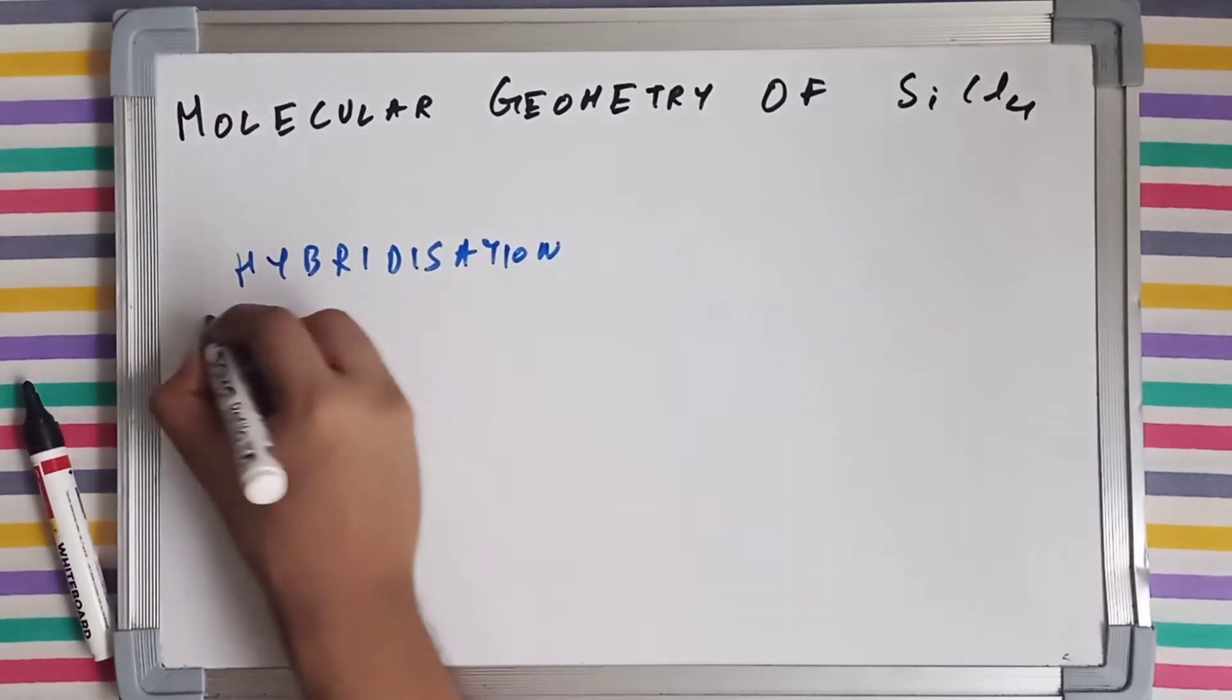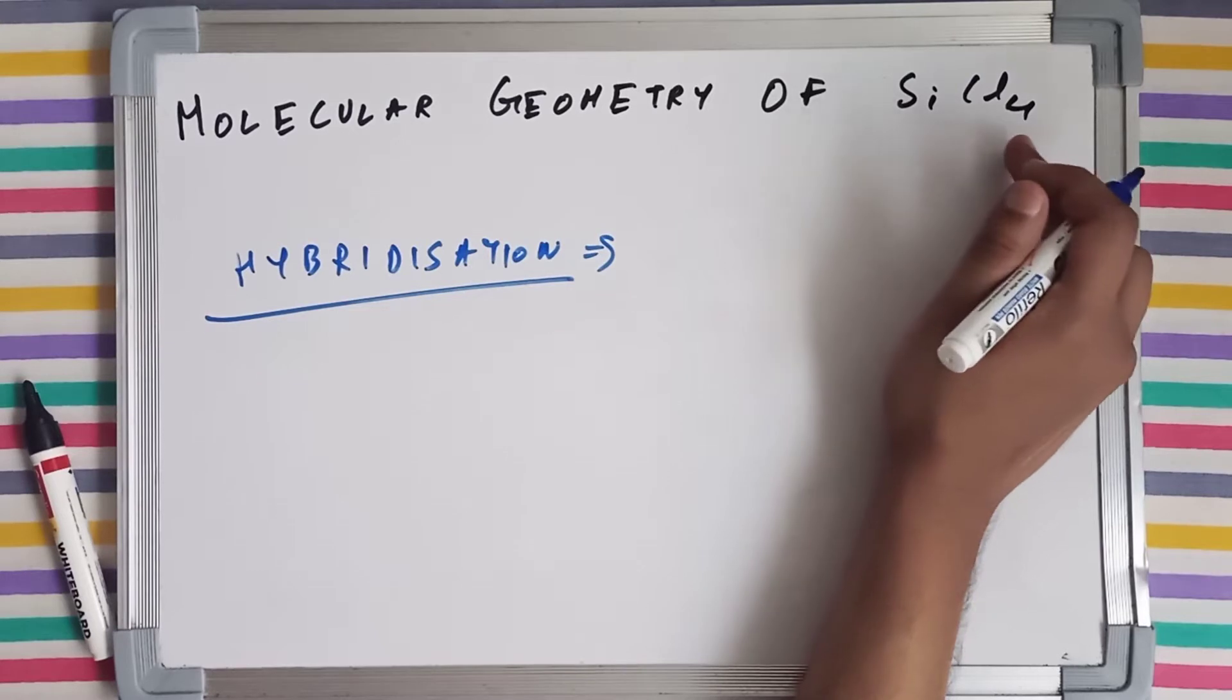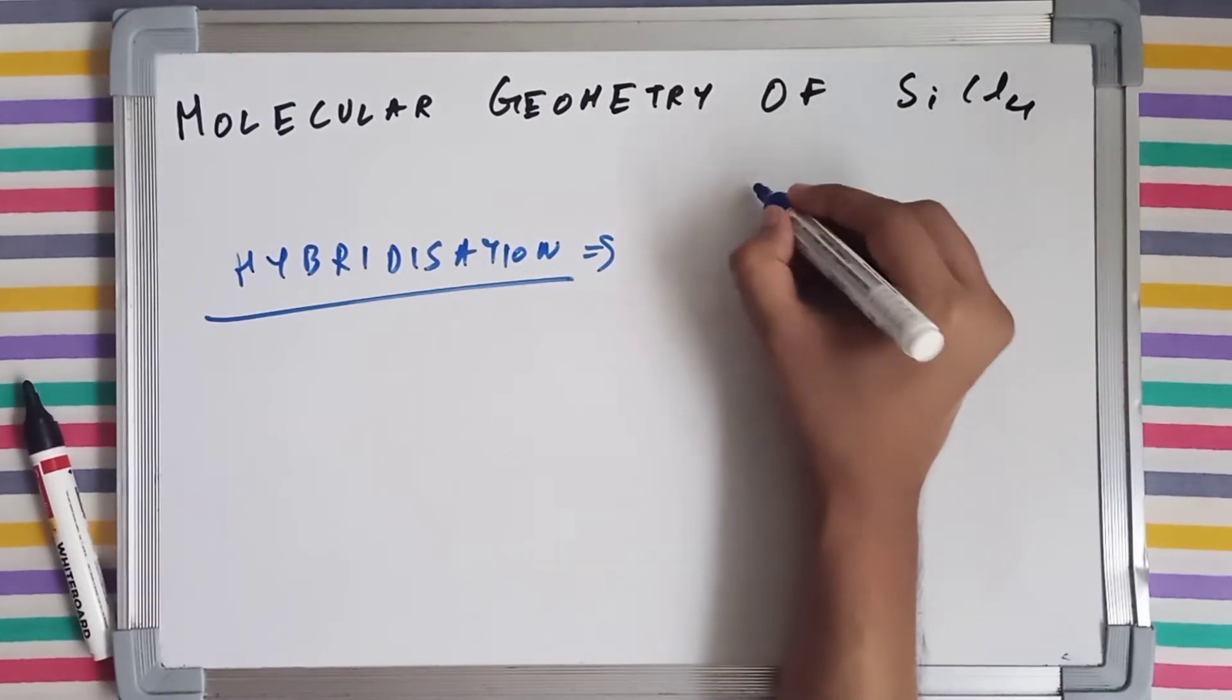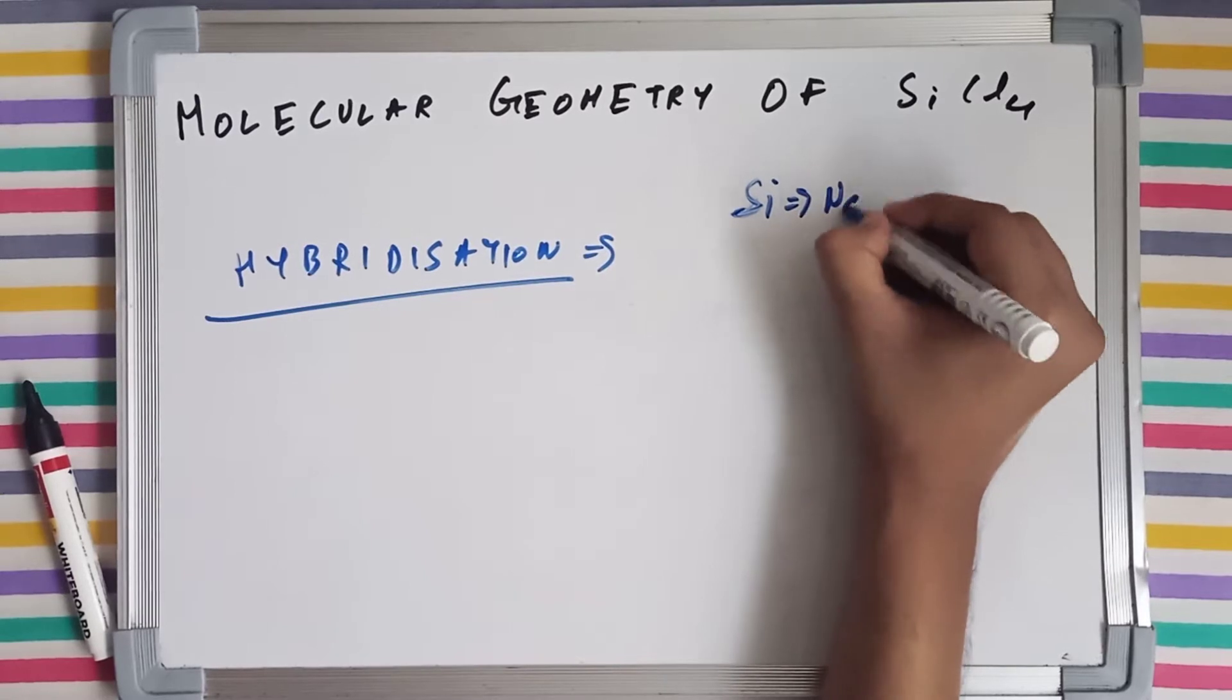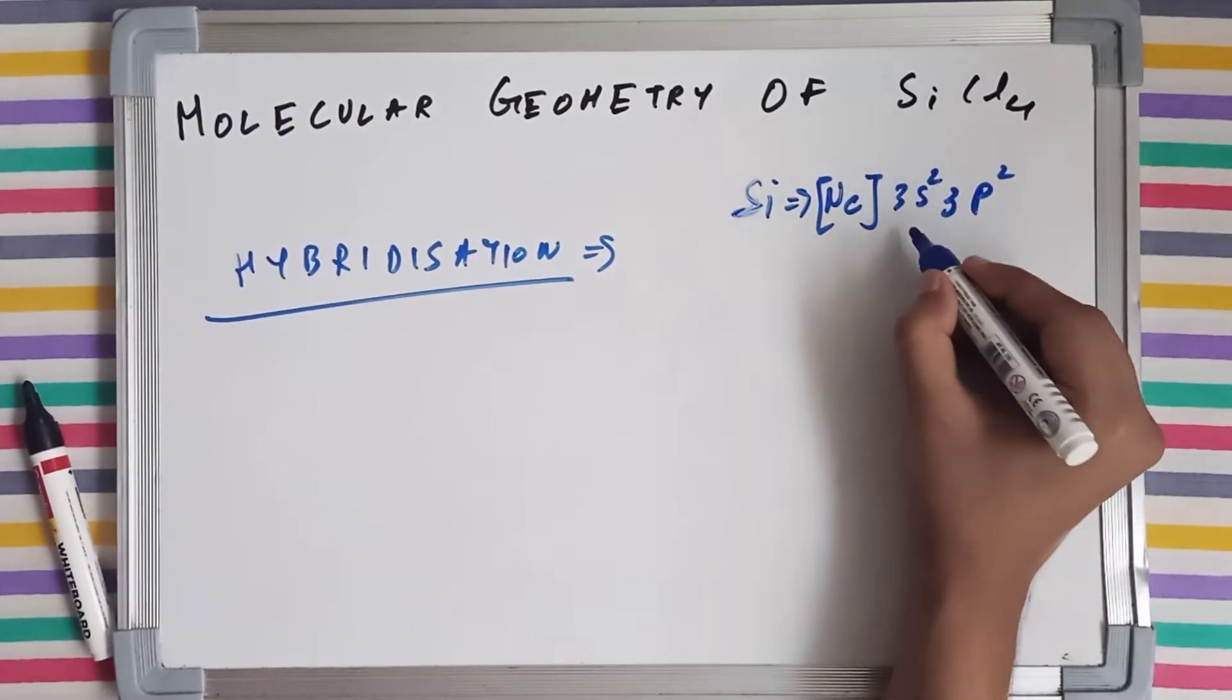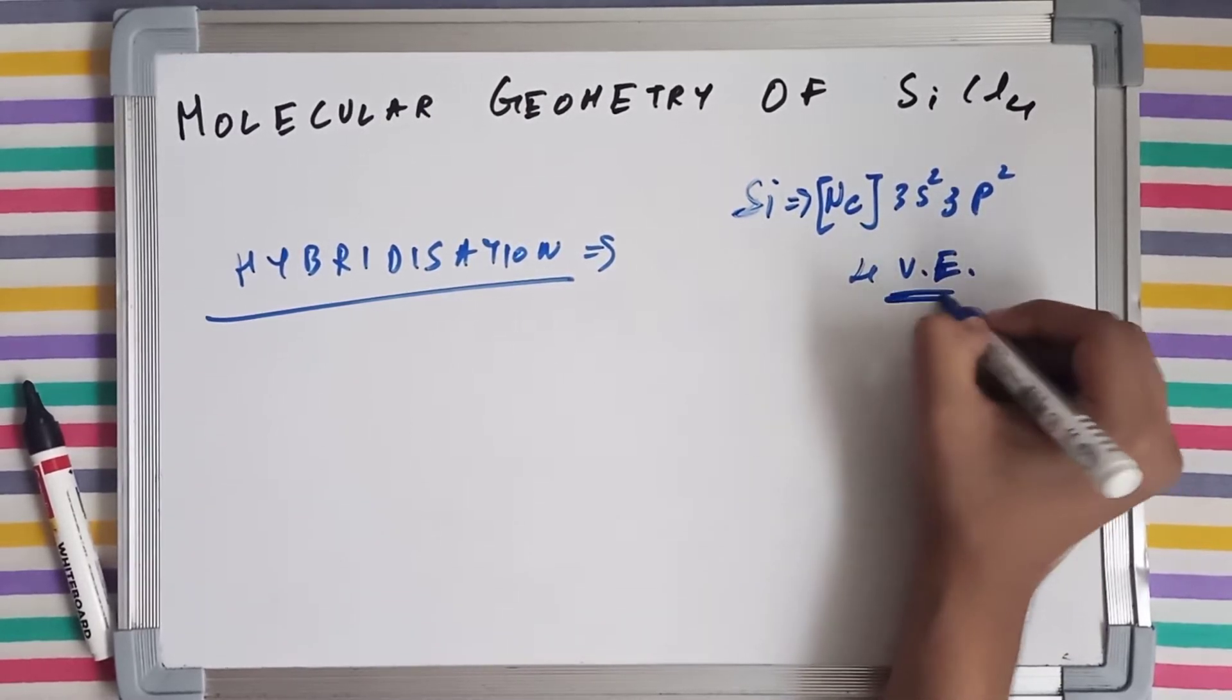For that, we need to find out the valence electrons of each atom present in this molecule, which are silicon and chlorine, but chlorine are 4 in number. So for silicon, its electronic configuration is the inert configuration of neon and then 3s2 3p2. So it has got 4 valence electrons.